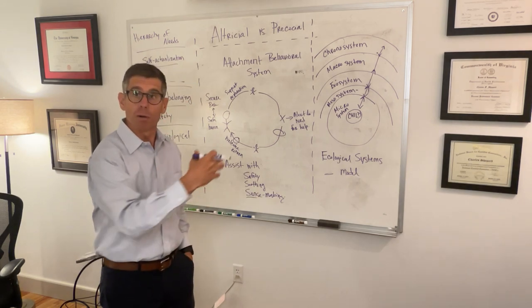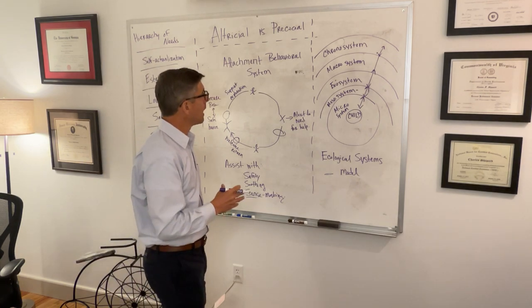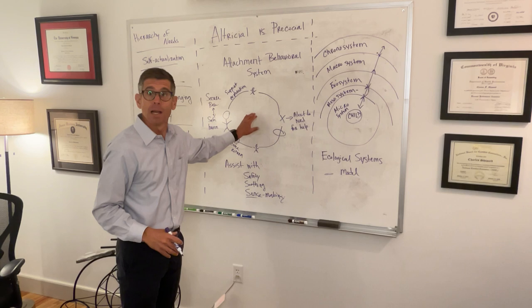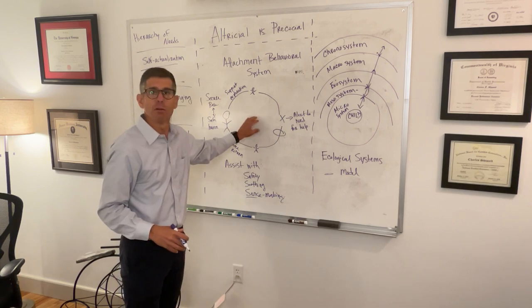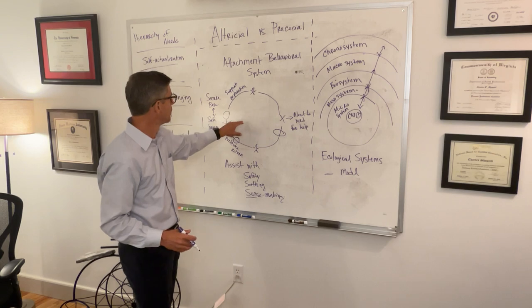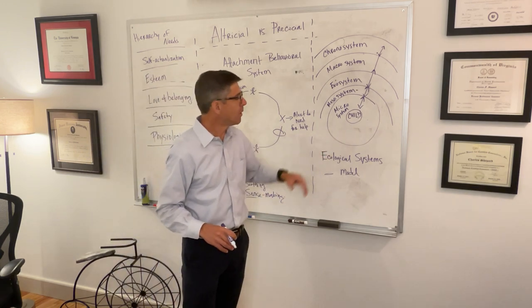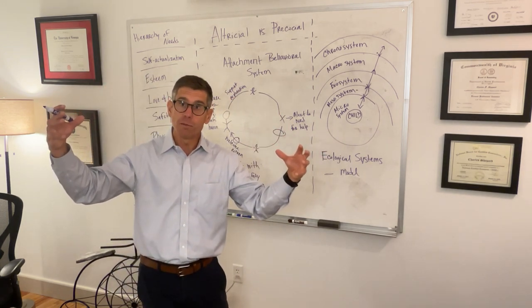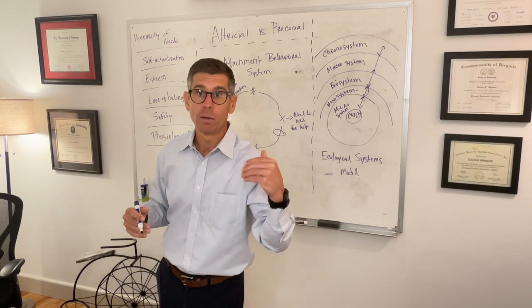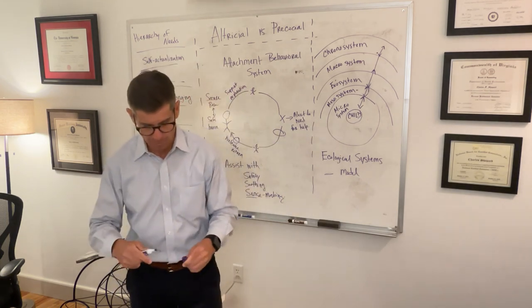Ainsworth and Bronfenbrenner were contemporaries and both developmentalists. Bronfenbrenner said this attachment framework made a lot of sense, but his worry was that it didn't go far enough — it assesses the interaction and its consequences between child and attachment figure. Bronfenbrenner proposed that there are other systems of influence beyond the parent-child relationship that are vital for understanding the factors affecting a child and a family's development. I'll pull up some notes here.